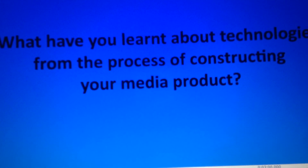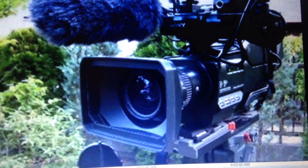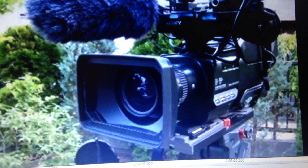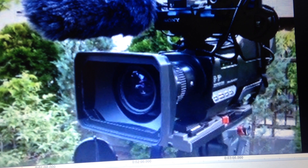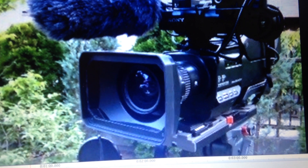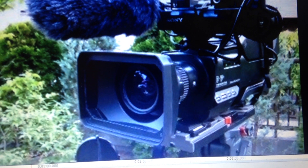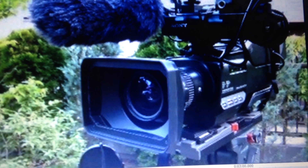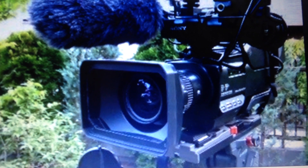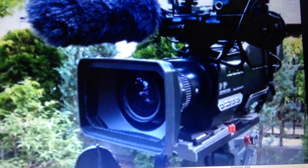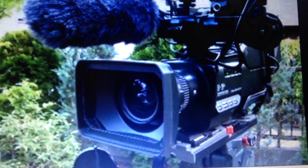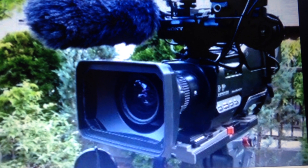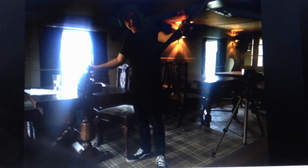The strengths of the Sony MC2000E are that it's a professional cinematography camera which records in 1080p and it has multiple settings such as automatic focus. This aided the filming process as it focused the lens by itself. The weakness of the Sony MC2000E was that the camera itself was very heavy and it was awkwardly big, which made it hard to manoeuvre and became time consuming when setting up the shoot.